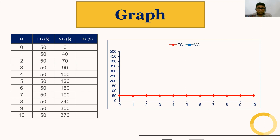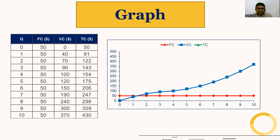Then we have variable cost. Higher the production, higher the variable cost; lower the production, lower the variable cost — therefore it is an upward sloping curve, the variable cost curve, and it starts from the origin. Then we have total cost, which is the summation of fixed cost and variable cost, so the total cost curve is above the variable cost curve and does not start from the origin.